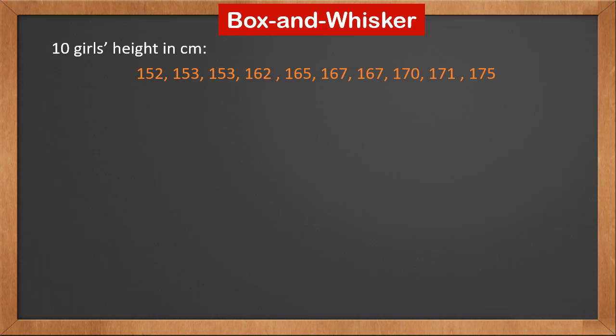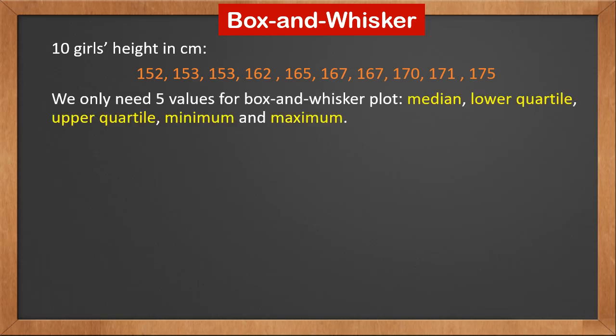Here are 10 girls' heights in centimeters. They are sorted. To draw a box and whisker plot, we only need five values: median, lower quartile, upper quartile, minimum, and maximum.